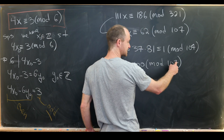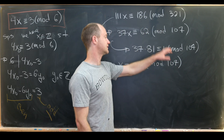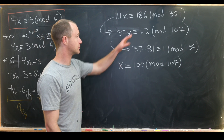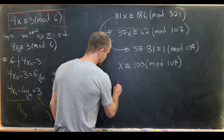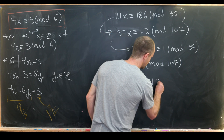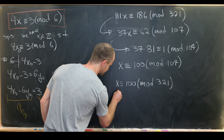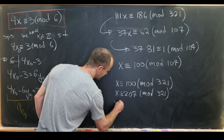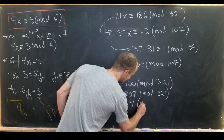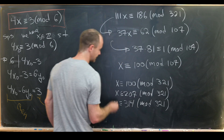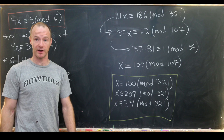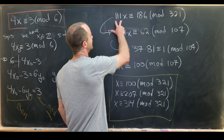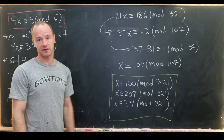Since 321 / 3 = 107, we can lift the single solution mod 107 back to three incongruent solutions mod 321 by adding copies of 107. The three solutions are x ≡ 100 mod 321, x ≡ 207 mod 321, and x ≡ 314 mod 321. By theorem, we expect gcd(3, 321/107) = 3 solutions, which checks out.